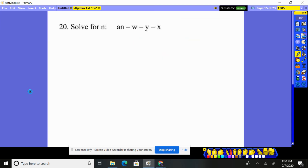One more. Solve for n. Ooh, there's no numbers. No big deal. Do it the same way. I want to get the n by itself. So I want to move the y over, and then I'm going to move the w over. And then the final step is I'll divide by a to get n by itself.